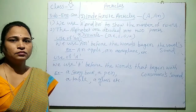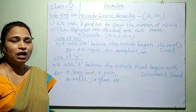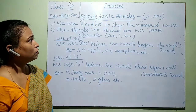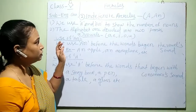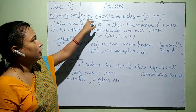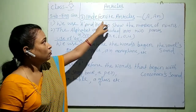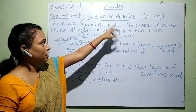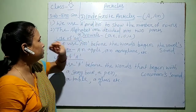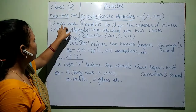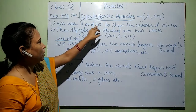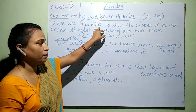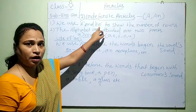So children, our first article was the definite article 'the'. Now we will discuss the indefinite articles. What are the indefinite articles? 'A' and 'an' are indefinite articles. We use 'a' and 'an' to show the number of nouns.